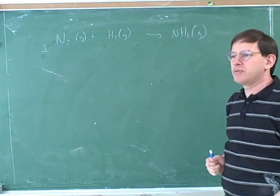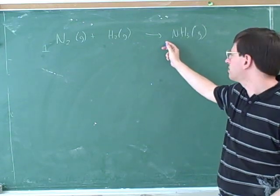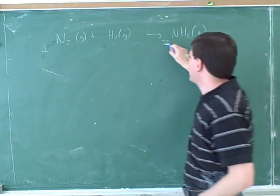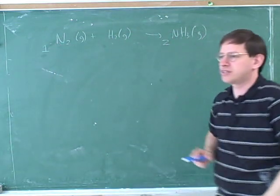All right. Now, what's the next number that we can determine? Well, now we can determine what this number has to be. What does this number have to be? Two. Because I've decided that this is going to be one, so I need two nitrogens on the left and two nitrogens on the right.